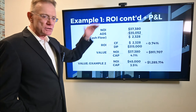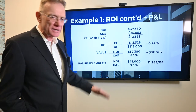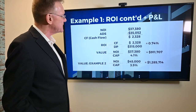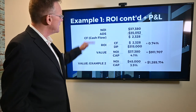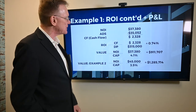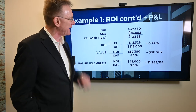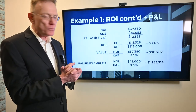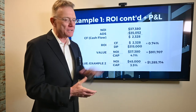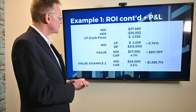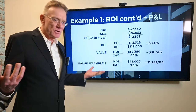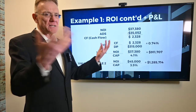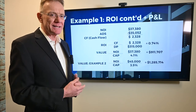We know our NOI is $37,000 and change, and our ADS is $35,000. That gives us a positive cash flow of $2,328. So what does that mean — is that good or bad? Well, the good part is it's a positive cash flow, not a negative one.